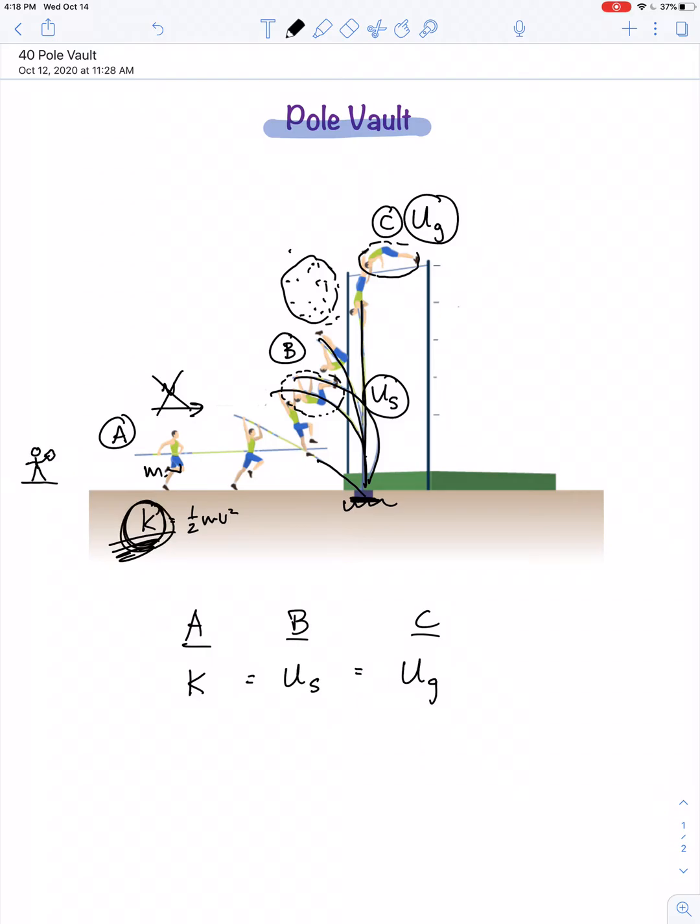But where did the ham and bacon and sausage get its chemical potential energy from? Well, I'm going to assume that the cows and pigs had eaten some form of grass or vegetable matter. So, the chemical potential energy in the grass, or hay, or whatever it is, the grain, became the chemical potential energy in the animal protein.